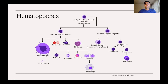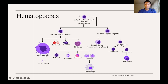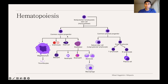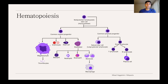Hematopoiesis is the term describing the development of blood cells — you can think of it as the blood cell family tree. All blood cells start out as a multi-potential hematopoietic stem cell. Here is a key branch point: this stem cell can become either a myeloid progenitor cell or a lymphoid progenitor cell. This myeloid versus lymphoid lineage is one key classification difference of the leukemias.